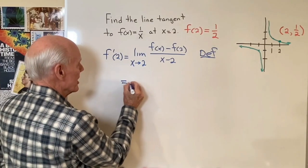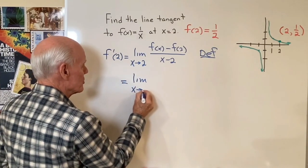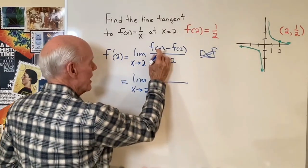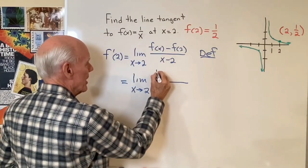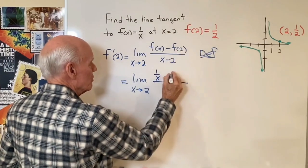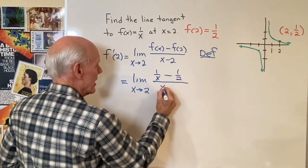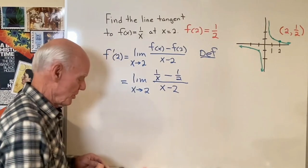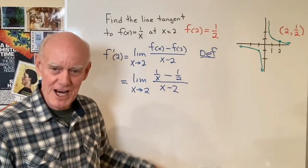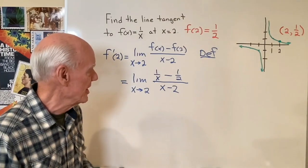So here I'm going to say this is the limit as x goes to 2 of: f of x is equal to 1 over x, f of 2 is 1 over 2, and then x minus 2. So here I have a complex fraction — that is, a fraction that has fractions within it.